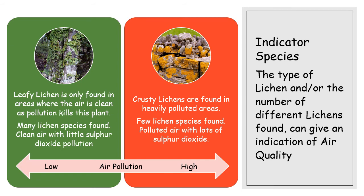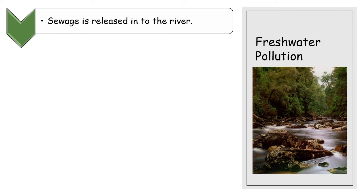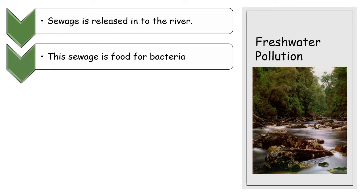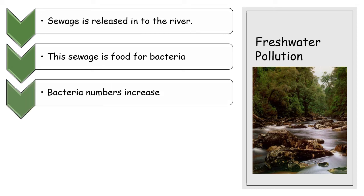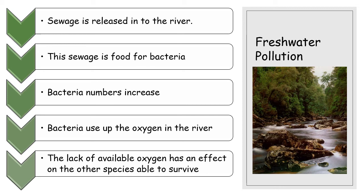Another area where indicator species can detect pollution is in fresh water. Heading east towards Aberdeen there's a sewage treatment plant dealing with waste from our homes. If there's a problem and sewage is released into the River Dee, that's a problem for all the organisms living there. It's good for bacteria though — they get a huge amount of food, their numbers increase, and when they do they use up the oxygen in the river, which is bad news for other organisms and impacts biodiversity.